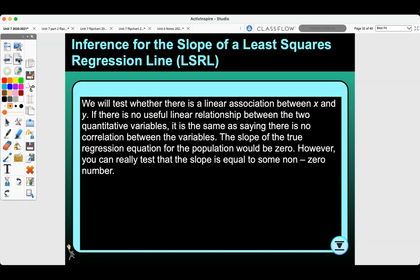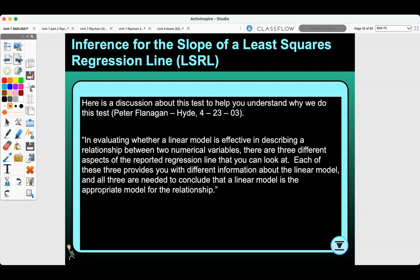However, you can really test that the slope is equal to some non-zero number. Here is a discussion about this test to help you understand why we do this test. In evaluating whether a linear model is effective in describing a relationship between two numerical variables, there are three different aspects of regression that you can look at. Each of these three provides you with different information about the linear model, and all three are needed to conclude that a linear model is an appropriate model for the relationship.